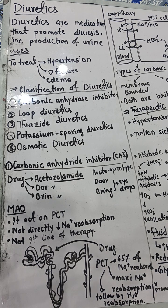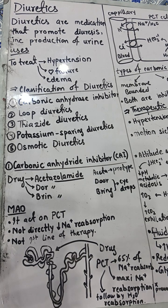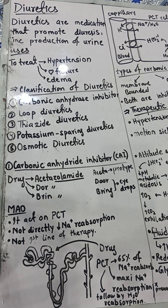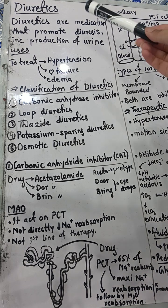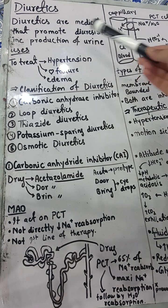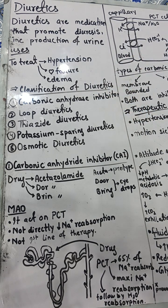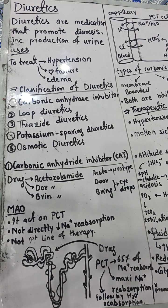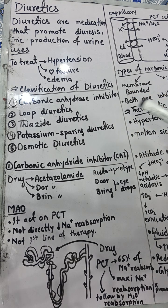Diuretics are not used as a first choice in all cases because they cannot be given to patients who have renal diseases, but in some cases we can use them. Diuretics have a broad classification within themselves. Diuretics are medications that promote increased production of urine — the condition in which urine production increases is called diuresis.